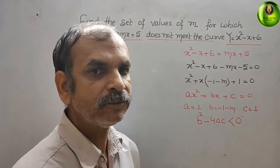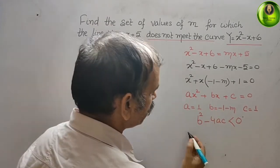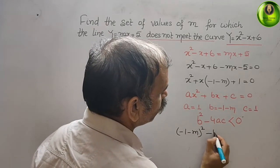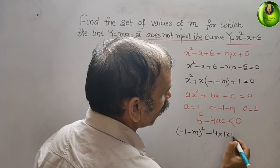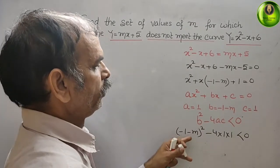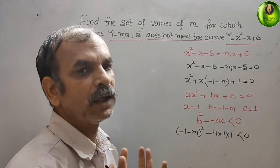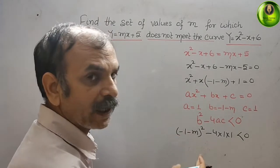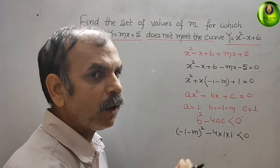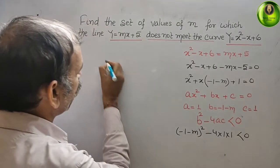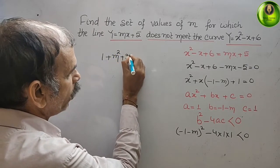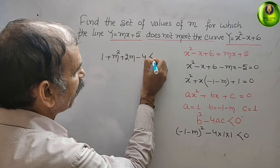Just substitute the values. We get b² = (-1 - m)², so (-1 - m)² - 4 × 1 × 1 < 0. Both terms have a minus sign, so this is in the form of (a + b)² — you get 1 + m² + 2m - 4 < 0.